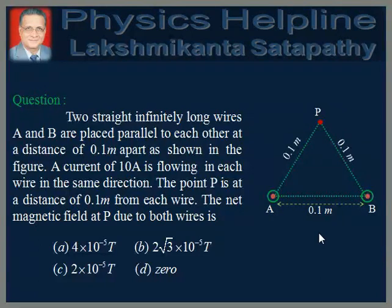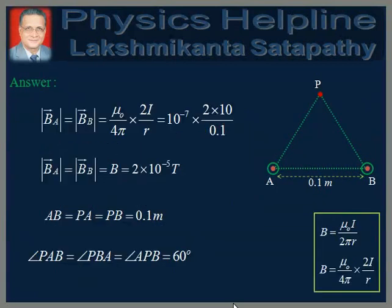This makes triangle PAB an equilateral triangle. We are required to find the net magnetic field at point P due to the two current-carrying wires.